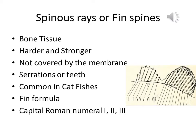The third type of fin rays is the spinous rays or fin spines. Spinous rays are made of bone tissues and are also known as actinotrichia. These are harder and stronger than the above-cited rays. These rays are usually not covered by the membrane of the fin. They are often with secretions or teeth. They are common in catfishes and are cited in the fin formula by capital Roman numerals — I, II, III, etc.